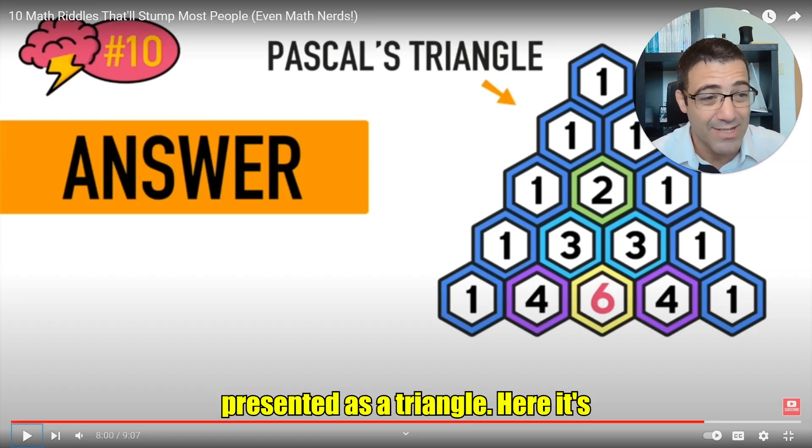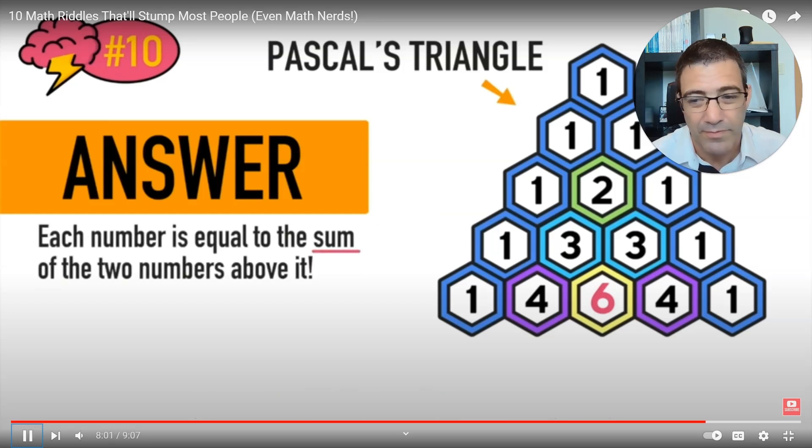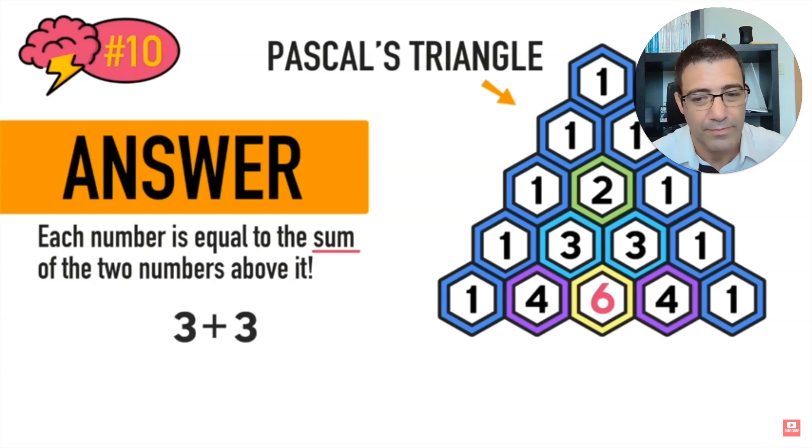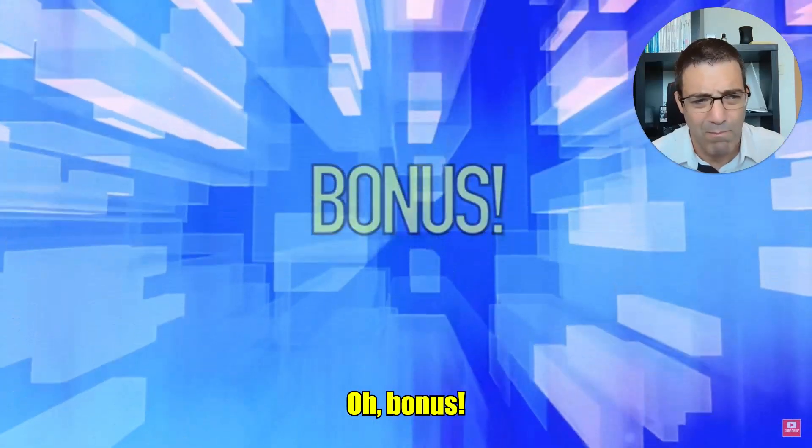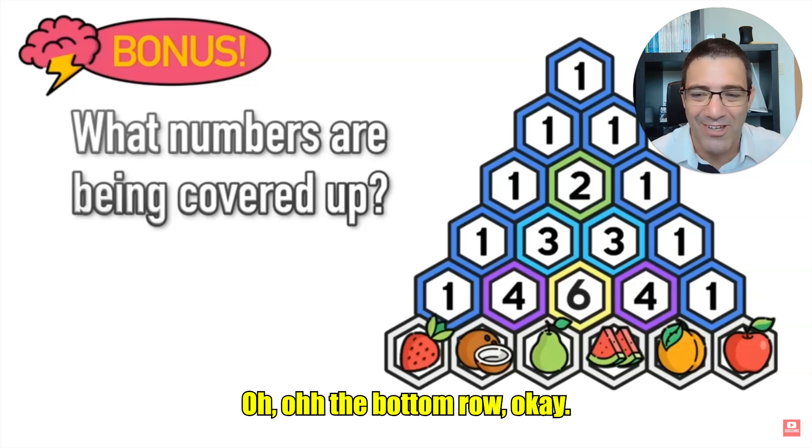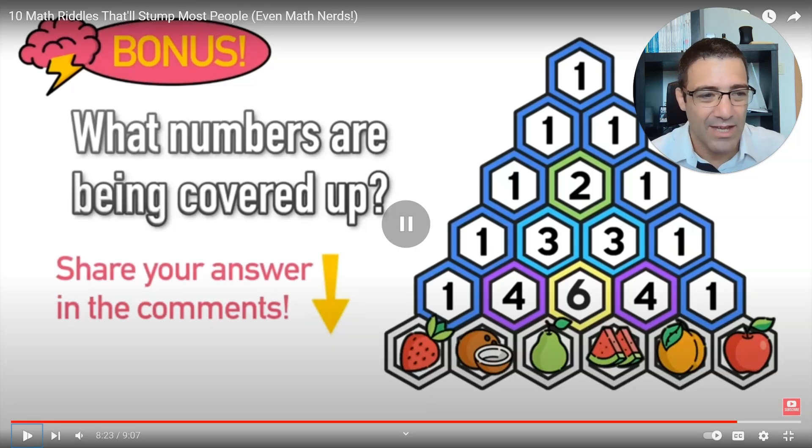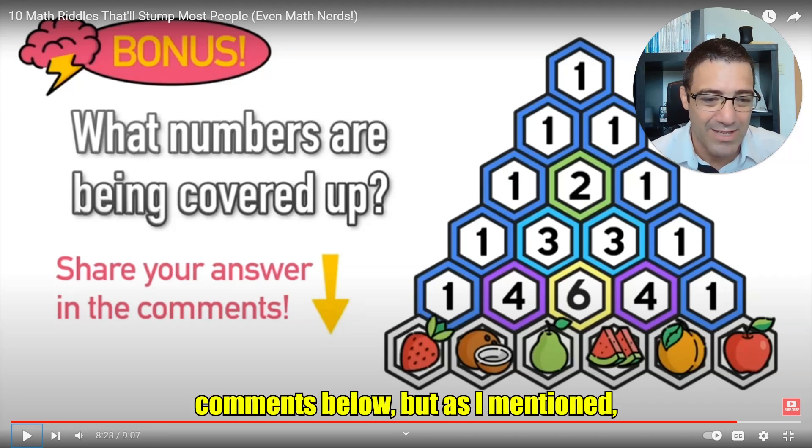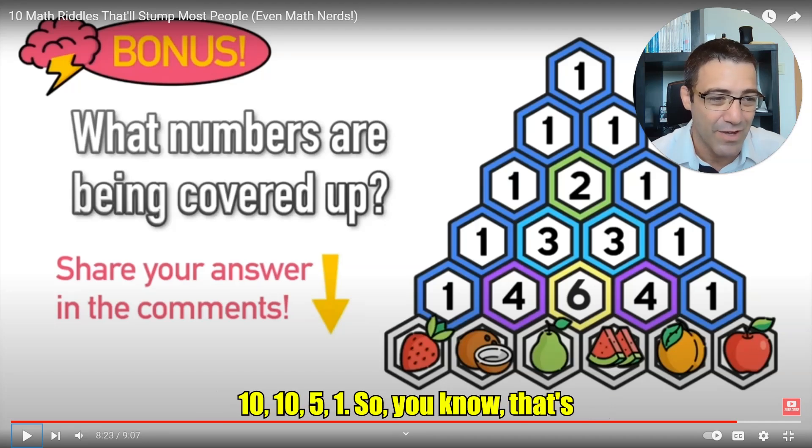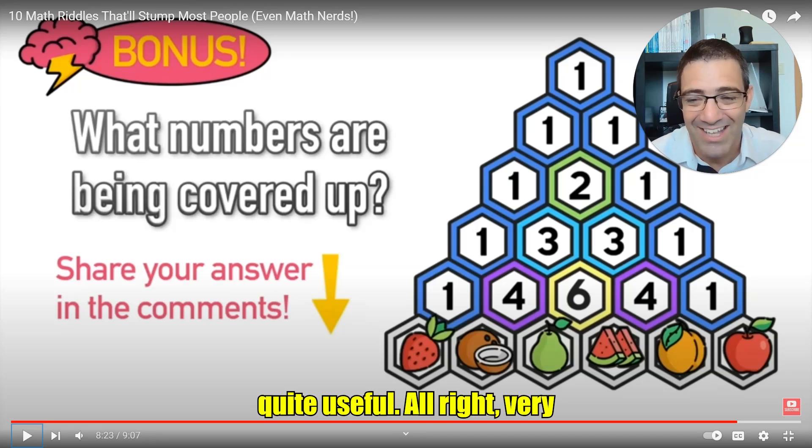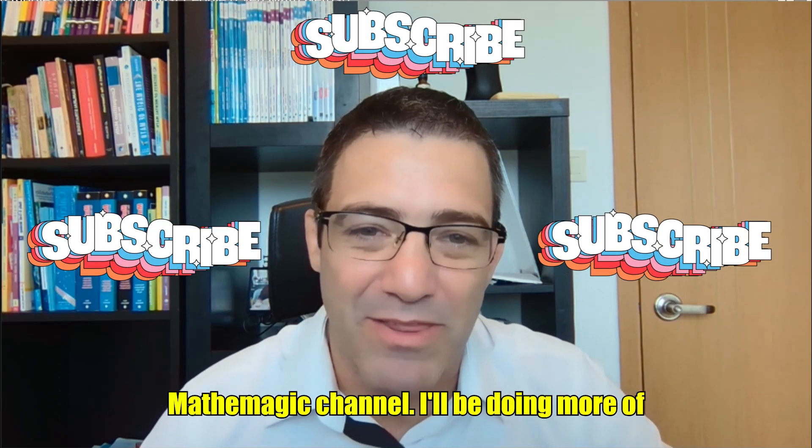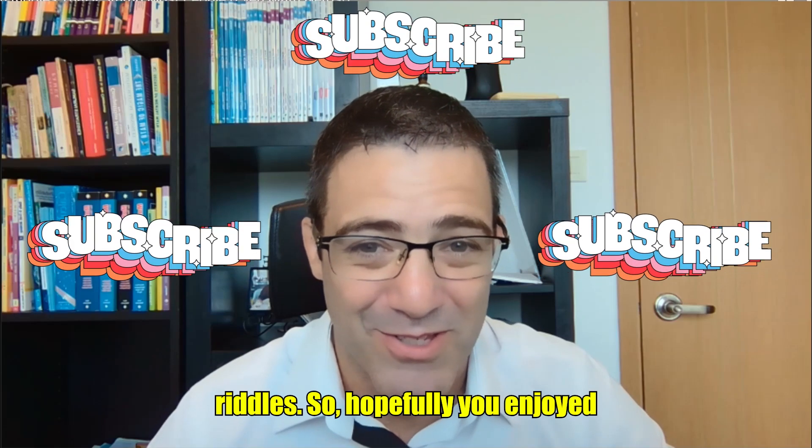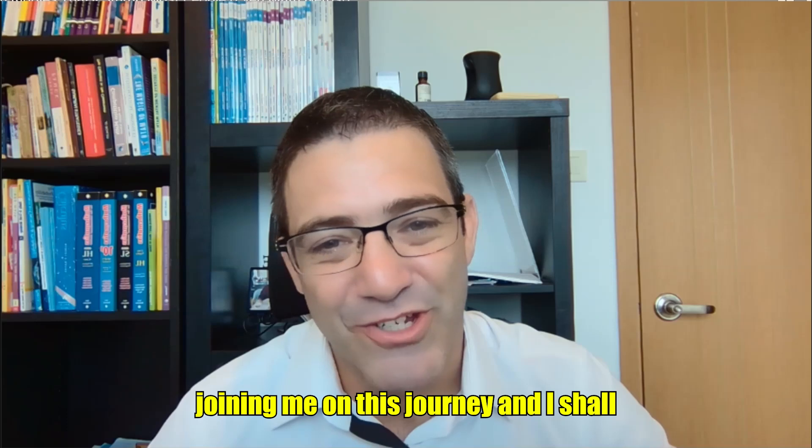It is Pascal's triangle. Yes, usually presented as a triangle. Here is presented in hexagons but it's pretty cool. Oh, bonus! All the bottom row, okay. You can put your answers in the comments below, but as I mentioned, if you know Pascal's triangle, it's one, five, ten, ten, five, one. So you know that, that's quite useful. All right, very cool. I hope you enjoyed doing this. Thanks for joining me on these questions. Remember to like and subscribe to the Mathemagic channel. I'll be doing more of these because I just enjoy solving math riddles. So hopefully you enjoyed joining me on this journey and I shall see you on the next one. Bye bye.